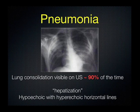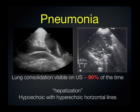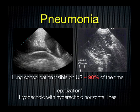Moving on to pneumonia: about 88 to 90% of consolidations can be seen with ultrasound. The characteristic features we look for are hypoechoic consolidations with hyperechoic lines running through. For example, the hypoechoic lung — dark because it's been infiltrated with pus or atelectasis — with hyperechoic horizontal lines representing bronchograms. Another example with a low-frequency probe shows the diaphragm, pleural fluid, and compressed lung. Here you can see bright white hyperechoic structures — something we call hepatization of the lung, meaning the lung has taken on more of a solid organ appearance.